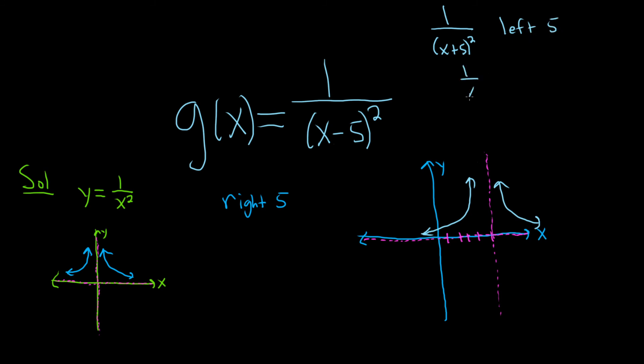If you take 1 over x squared and you add 5 to this entire y value, then you're going to go up 5. And if instead you take 1 over x squared and you subtract 5 from the y value, then you're going to go down 5.